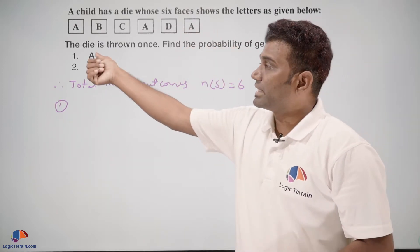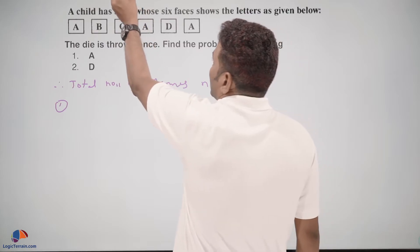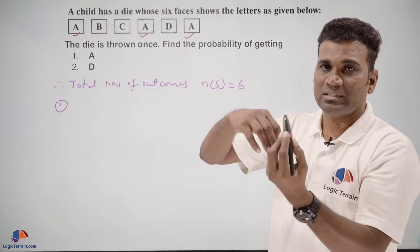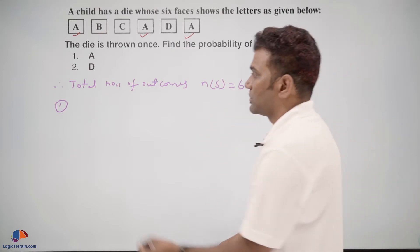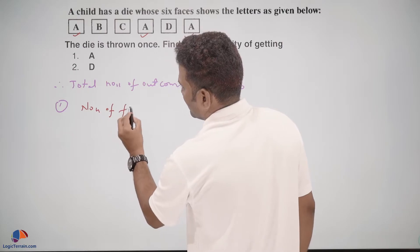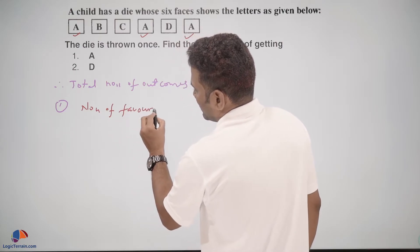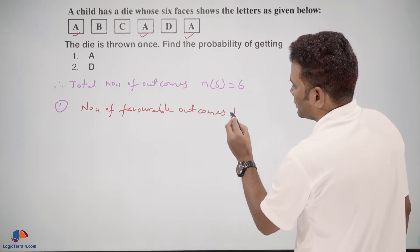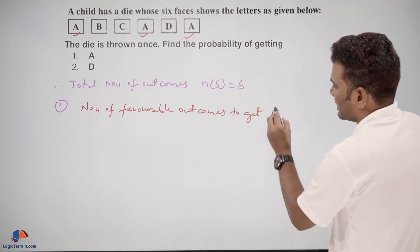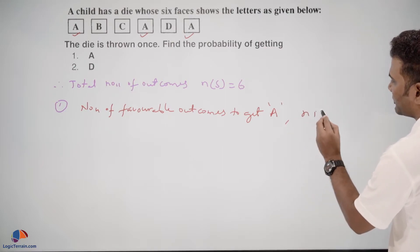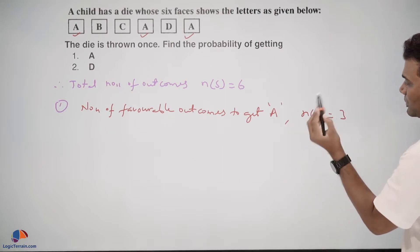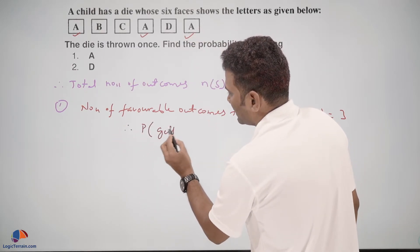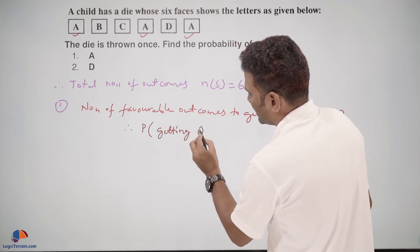Find the probability of getting A. How many A's are there? We have 1, 2, 3—on three faces there is A. So number of favorable outcomes to get A, that is n(E), equals 3. Therefore, probability of getting A...